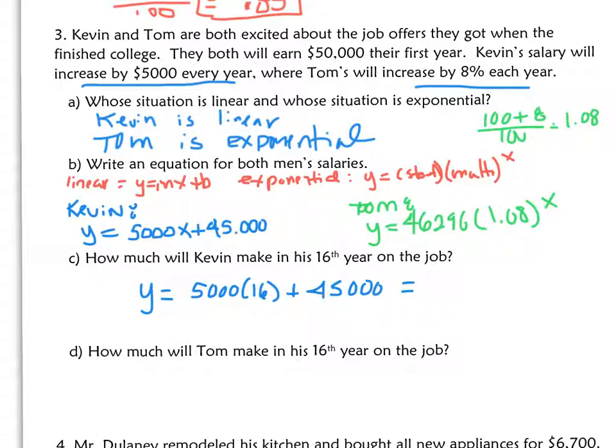How about Tom in his 16th year? Well, Tom's going to be 46,296 times 1.08 to the power of 16. What does that equal? Plug it into your calculator, figure it out, and write down the answer.